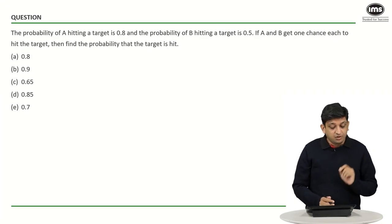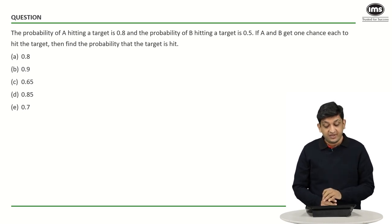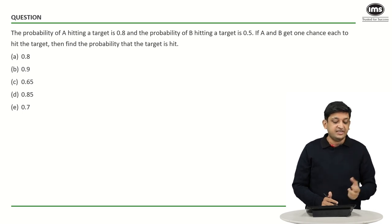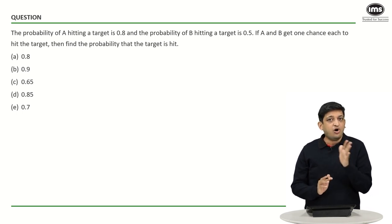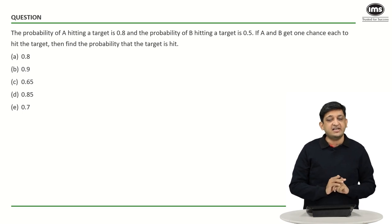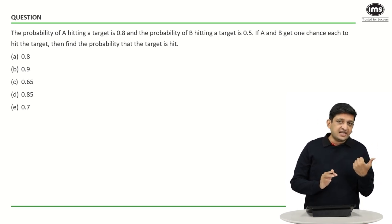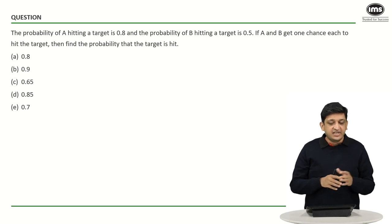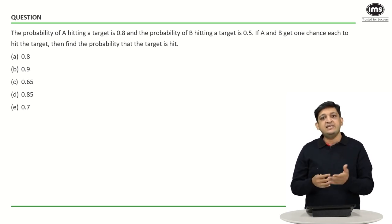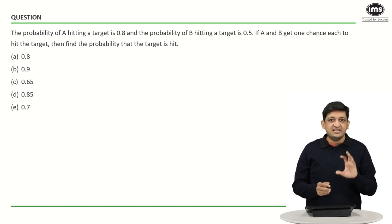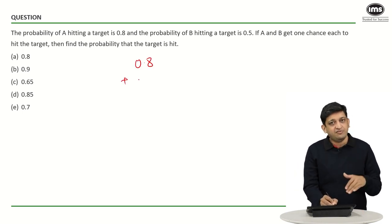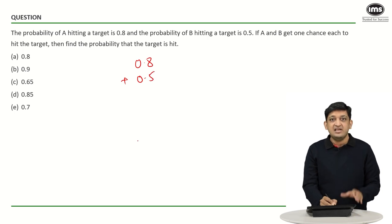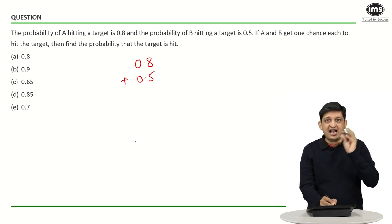Coming to the first question: the probability of A hitting a target is 0.8 and the probability of B hitting a target is 0.5. If A and B get one chance each to hit the target, find the probability of the target being hit. The target being hit means either A hits and B does not, or A does not hit but B does, or both A and B hit the target. So the answer is going to be the probability of A hitting the target, which is 0.8, plus the probability of B hitting the target, which is 0.5, minus the probability of A and B both hitting the target.